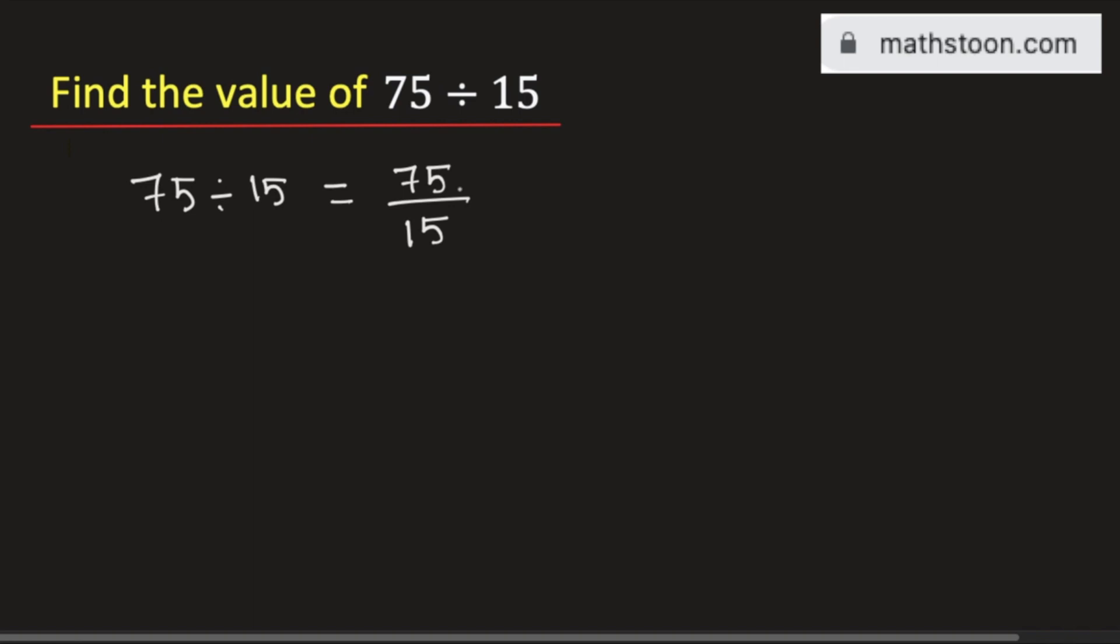Now to find its value, we will find the prime factorization of 75 and 15. We know that 75 is divisible by 3, then we get 25. 25 is divisible by 5, and we get 5 here. 5 is divisible only by 5, and we get 1.